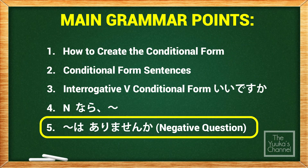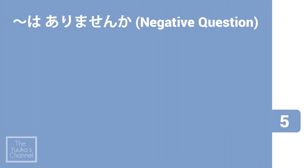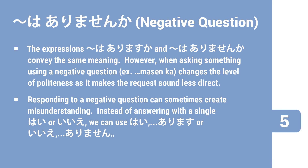The last topic is wa arimasen ka. The expressions wa arimasu ka and wa arimasen ka convey the same meaning. However, when asking something using a negative question — e.g., masen ka — it changes the level of politeness, making the request sound less direct. Responding to a negative question can sometimes create misunderstanding. Instead of answering with a single hai or iie, we can use hai arimasu or iie arimasen.